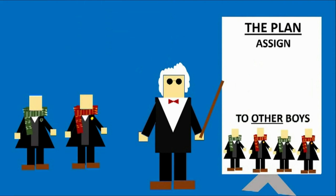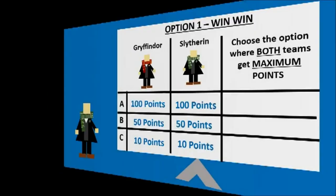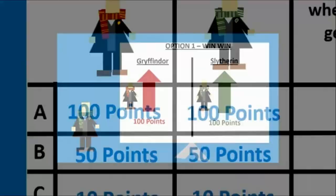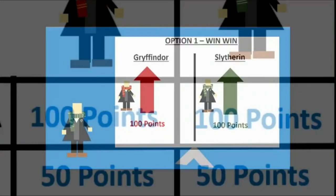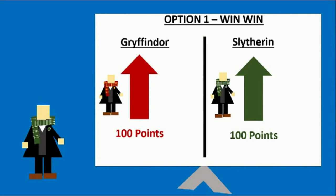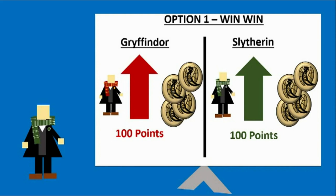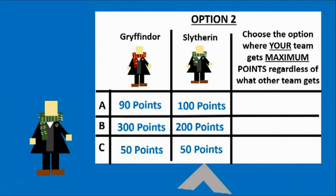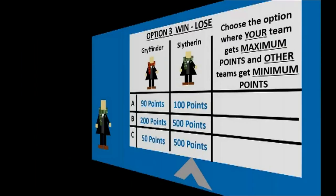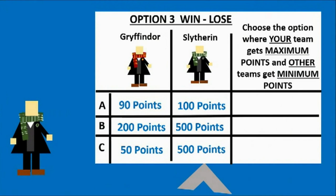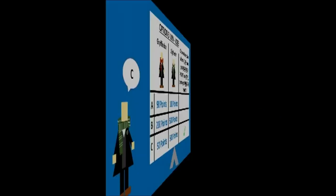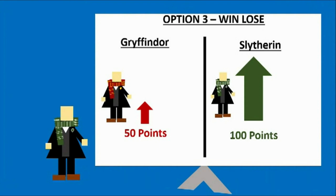Instead of positive and negative numbers, this time the choices consisted of maximum and minimum points. The boys could go with option one, allocating the maximum number of points to both their own group and the other group — meaning both groups would have the maximum number of points and could go home with the maximum reward. This would be known as the win-win situation. Or they could go with option two, allocating the maximum number of points to their own group member regardless of what the other group received. Or they could choose option three, allocating the largest number of points to their own group member and the smallest to the other group member, maximizing the difference in points and rewards — leading one group to win and the other to lose, creating a win-lose situation.